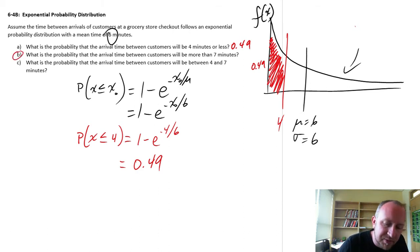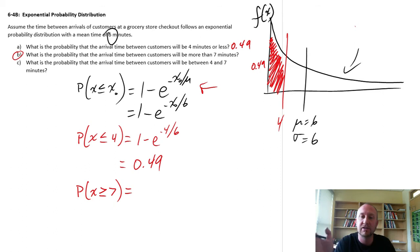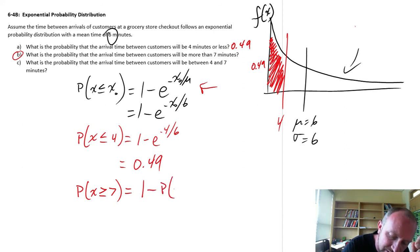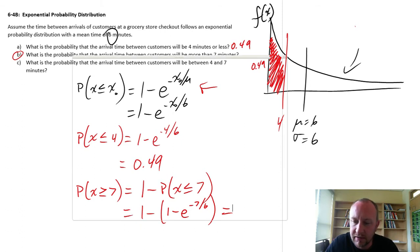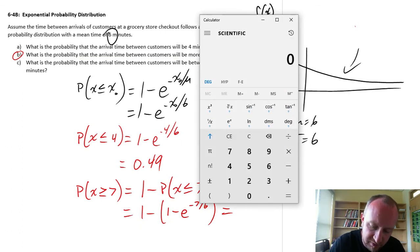Part B: What's the probability that the arrival time will be more than 7 minutes? Now what I'm looking for is the probability that it is more than 7. Given that this function gives us the area under the curve to the left, here I want the area to the right. So I have to say this is going to be 1 minus that probability that it is less than 7. Now I can substitute in my values. This is going to be 1 minus e to the negative 7 over 6. I'm going to do this in 2 steps just to avoid confusion with this calculator.